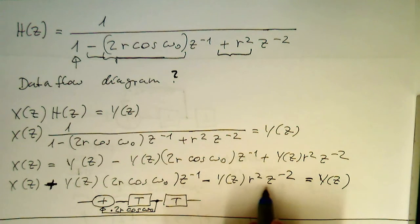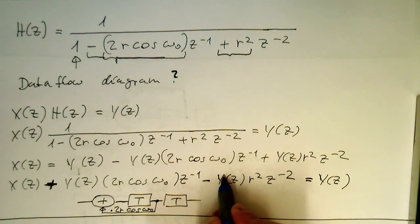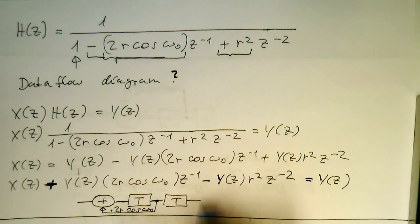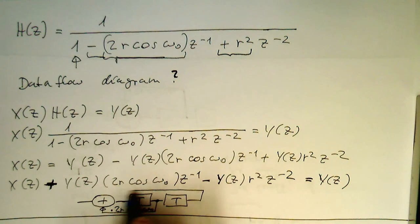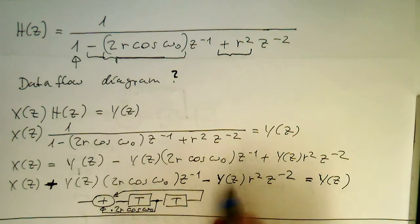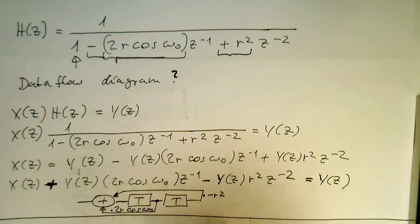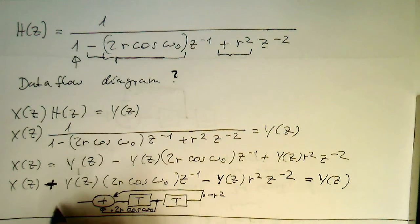And so now in the second step here, we need to multiply the delayed y of z by 2 times steps by r square, and subtracting this. So we need to send this here back. We need to multiply this here with minus r square. And this is essentially our IIR filter here.